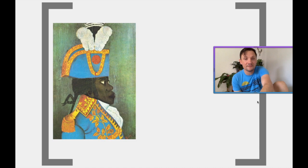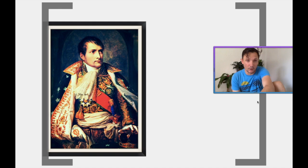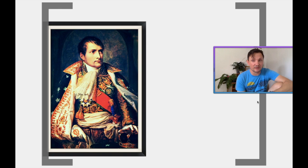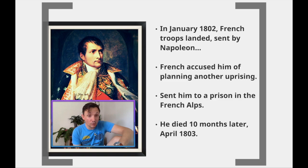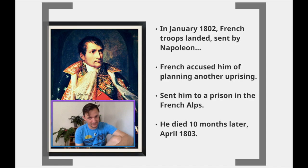Going forward though, who is going to come in and ruin everything? Here comes Napoleon. Notice I said 1793 — Haiti outlawed slavery — and they stay within the French Empire for a while. In 1802, Napoleon comes into power and French troops land, sent by him. What Napoleon wants to do is reinstate slavery. Napoleon wants to bring slavery back.